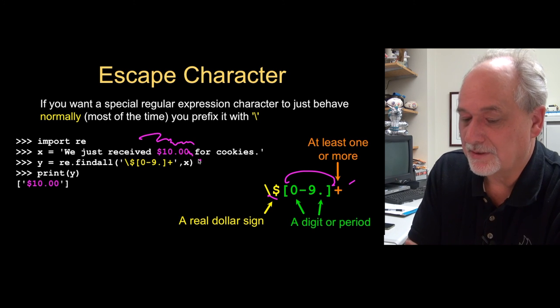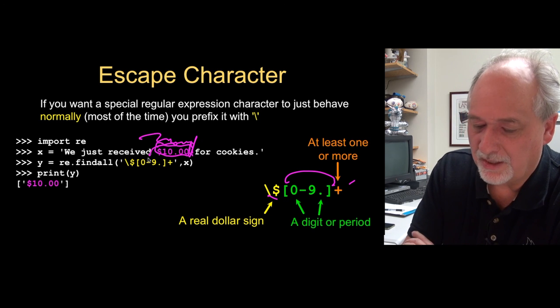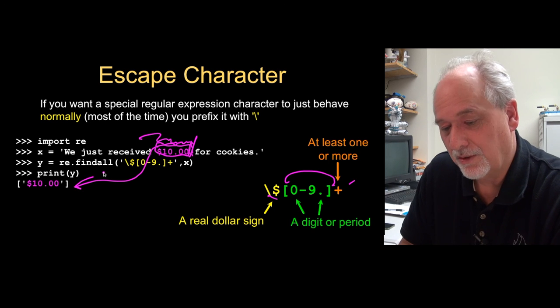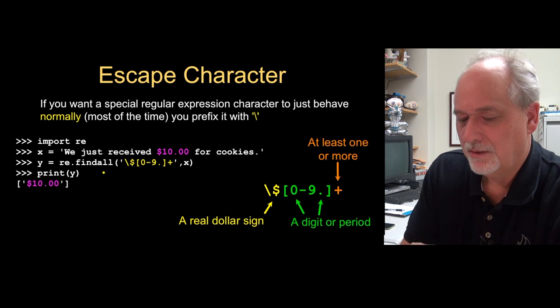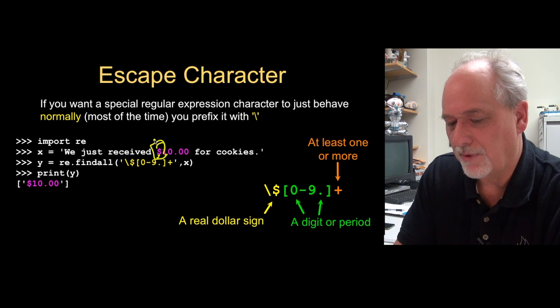So then it stops because this is a space. It's greedy matching. Then it pulls this out. So that's kind of why greedy has to be the default. Because otherwise, if it wasn't doing greedy matching, it would, if it wasn't doing greedy matching, it would stop here. Because it would find a dollar sign. Non-greedy would find a dollar sign and one character. And then it would give us dollar one rather than dollar ten.